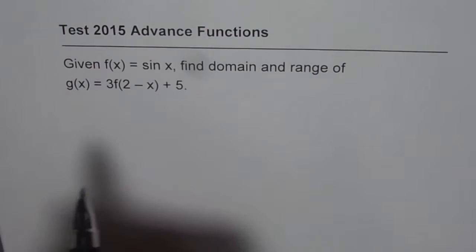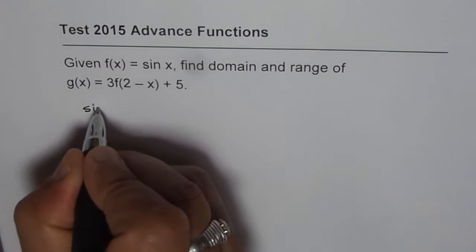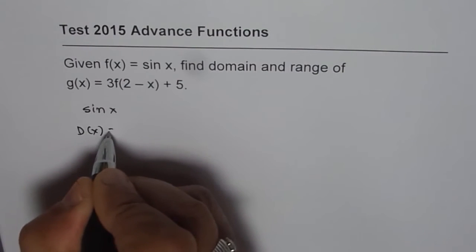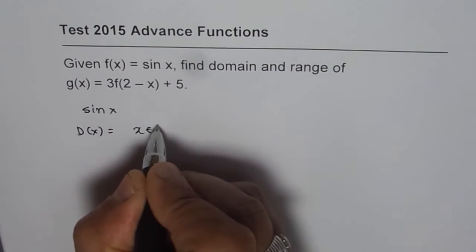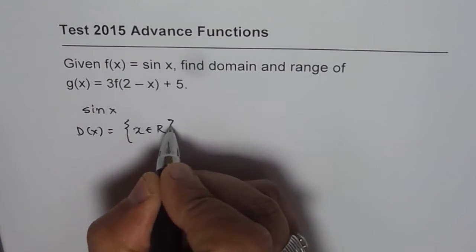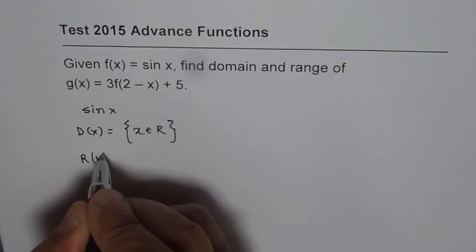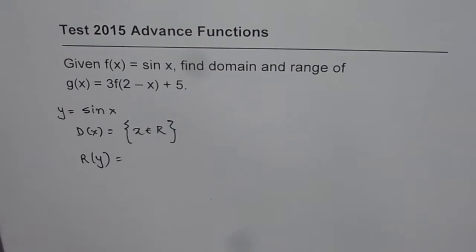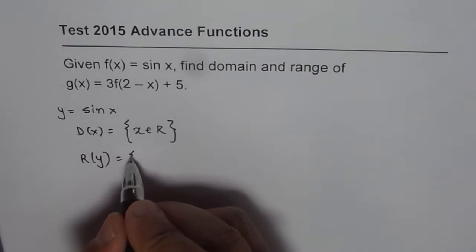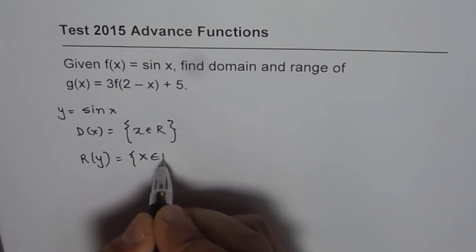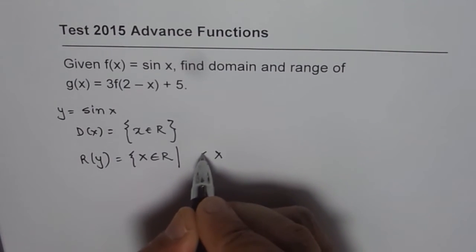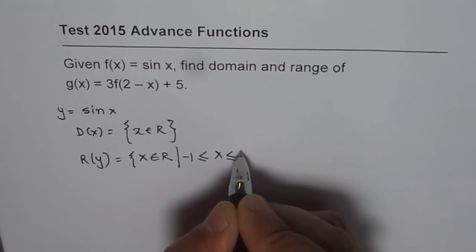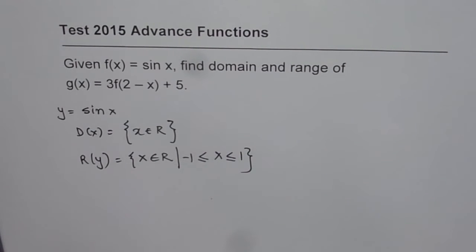Now as you know, let's first write down domain and range for sine x. The domain for sine x is x belongs to real numbers. There is no restriction. As far as the range is concerned, considering y equals to sine x, range is that y belongs to real numbers so that y is between minus 1 and plus 1. So the range is restricted.